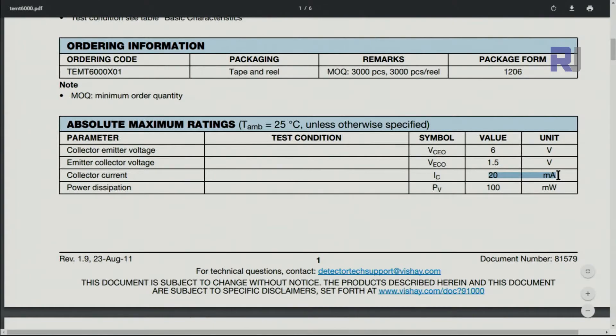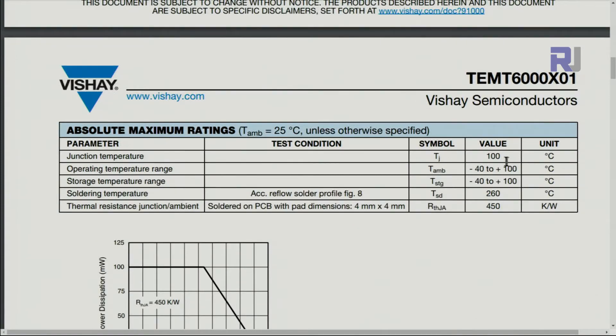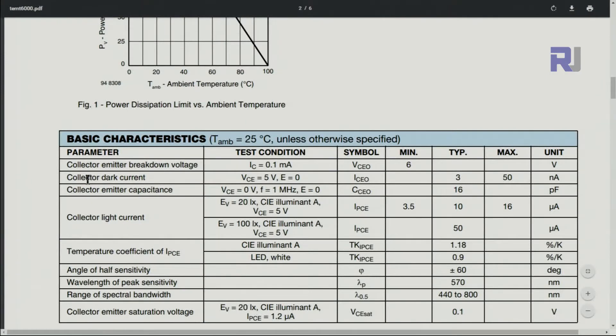Power is dissipated at 100 milliwatt and the junction temperature, up to 100 degrees Celsius it can work. The dark current at 5 volts when emitter is 0 would be typically 3 nanoampere when there is absolute dark.